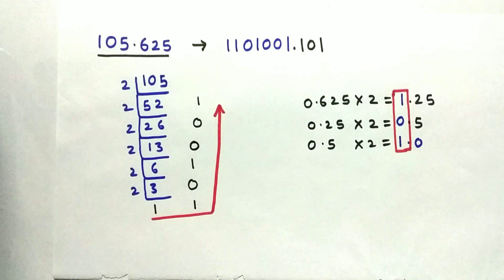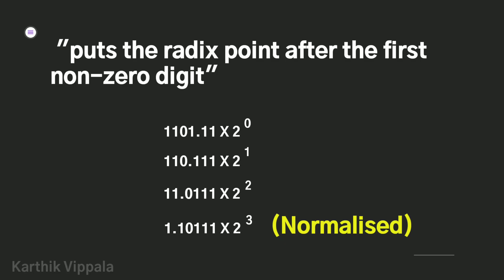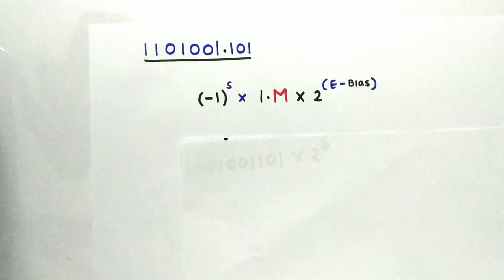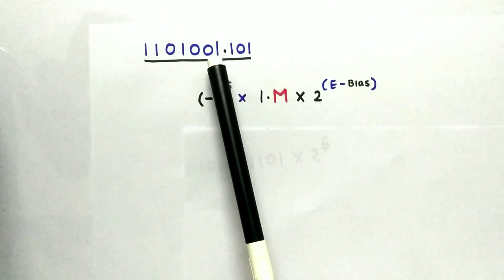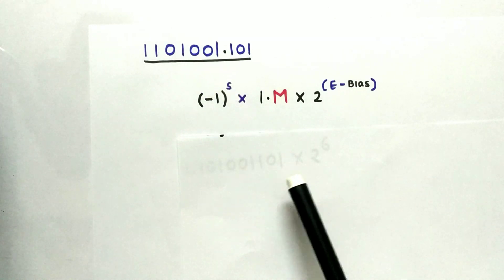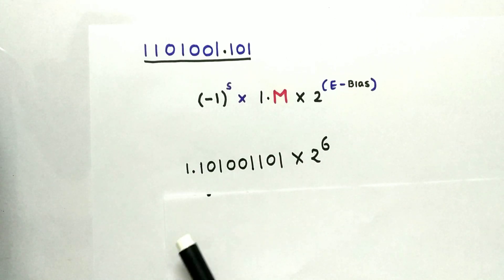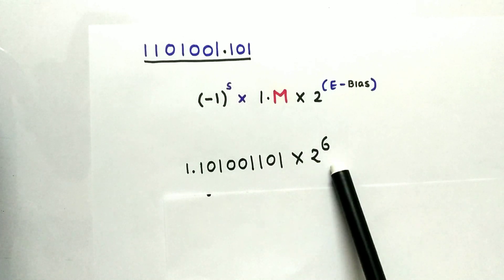The second step is to normalize this value. To normalize the floating point, we need to move the point just after the first MSB bit. As you can see in the examples, only one of them is normalized. To normalize our binary value, we need to move this point from here to here, and the values in between are 6. Our normalized value is 1.101001101 × 2^6.